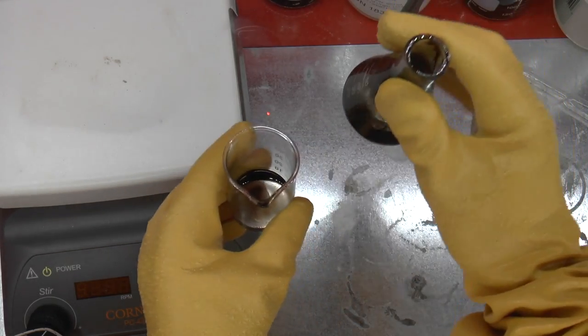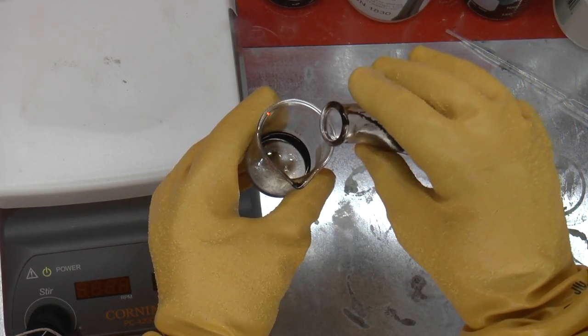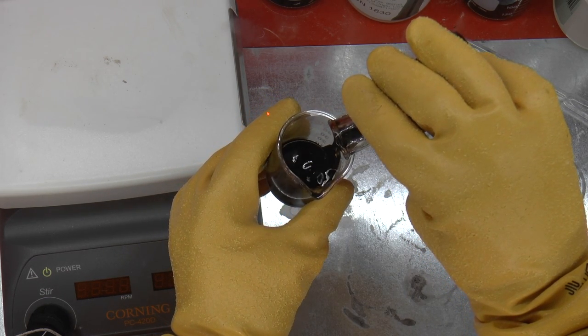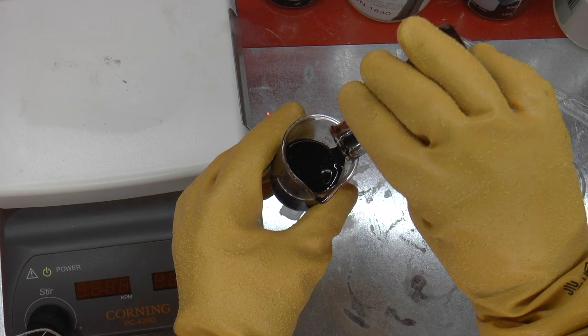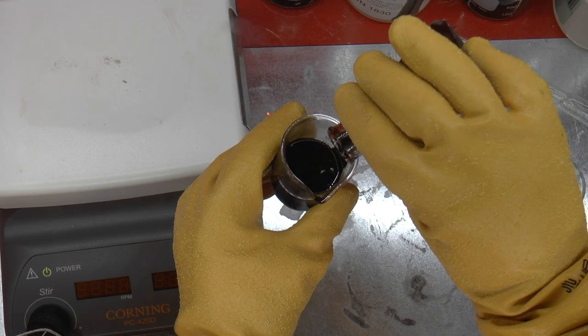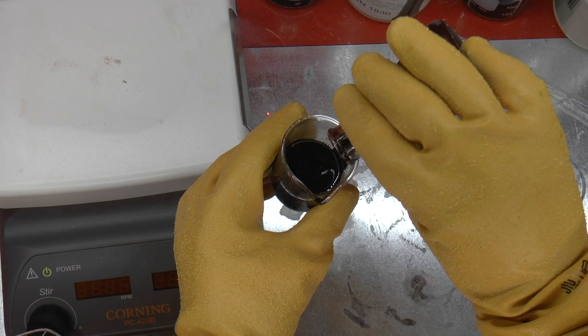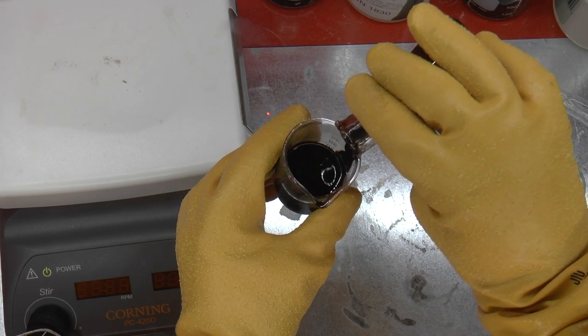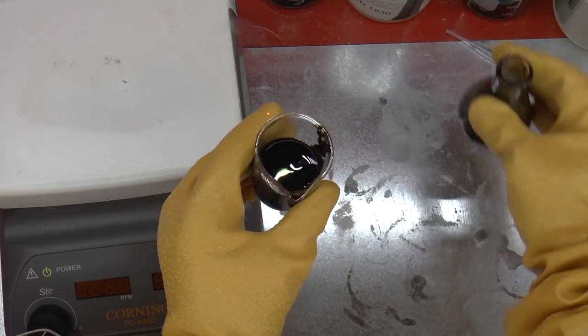Here's my beaker and here is my flask. So again, pouring it out slowly. This time I'm pretty sure that I have the dissolved chip in the flask.